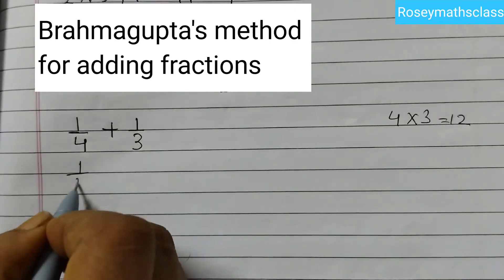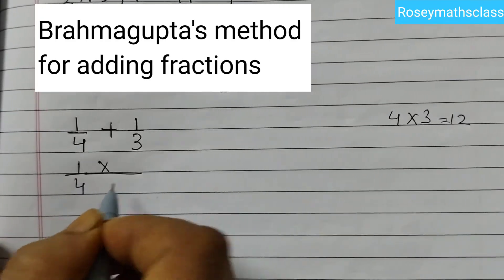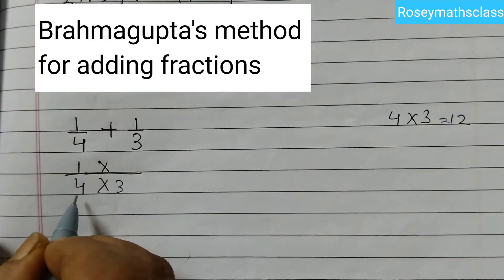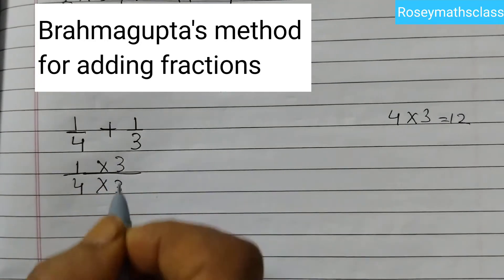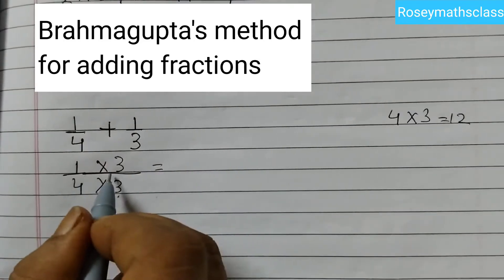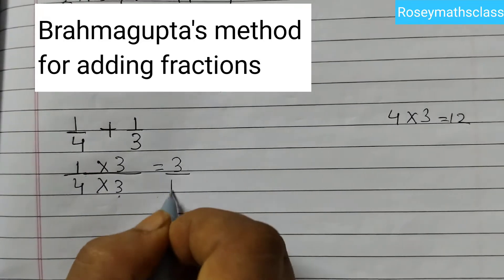So 1 over 4 multiplied by 3. Multiplying by 3 in the denominator, so we will multiply in the numerator also. This will become 1 into 3 is 3, 4 into 3 is 12.